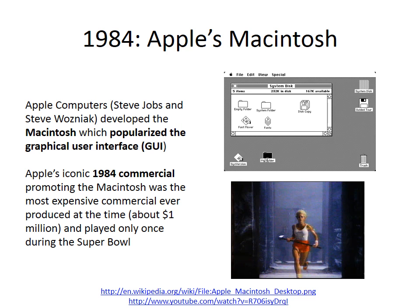In 1984, Jobs and Wozniak were about to change how everyday people interacted with computers. They developed a computer called the Macintosh, which used a graphical user interface, or GUI, allowing the user to use a mouse to click, drag, and drop — as opposed to the traditional command-line interface where you had to type all commands. The GUI had first been introduced in the 1960s by Doug Engelbart, but this was the first time it would become mainstream. To introduce the world to the Macintosh, Apple aired the most expensive commercial of its time just once during the 1984 Super Bowl. In the commercial, Big Brother represented IBM — Apple was going to liberate the world from IBM's ugly command-line interface.